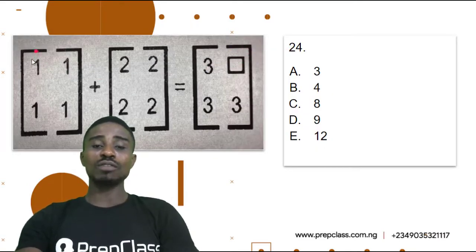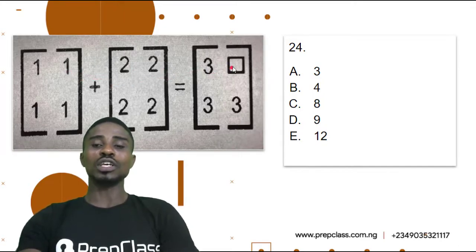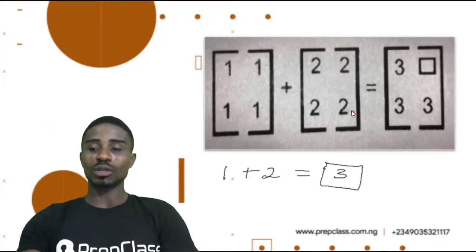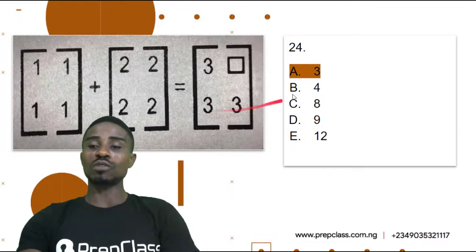Question 24. We have two brackets and a third bracket with an empty space to fill in. Using the understanding we gained from our sample, the first number plus the first number gives us the first result. So 1 plus 2 is equal to 3 — our answer here should be 3. Let's check: 1 plus 2 is equal to 3, and this will be our answer. The correct answer is 3, so this box 3 would be our answer. Question 24, option A — 3 is our answer.